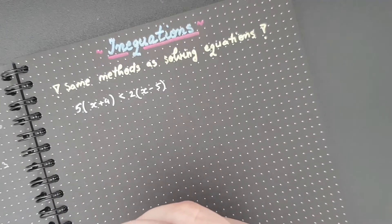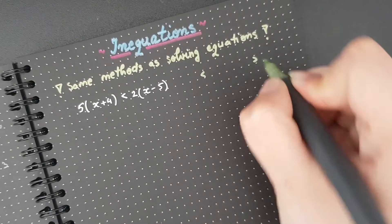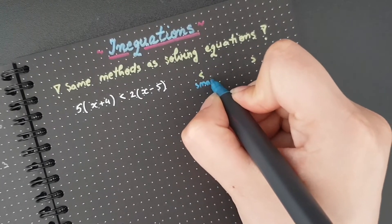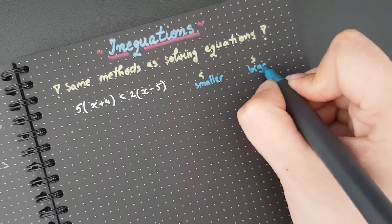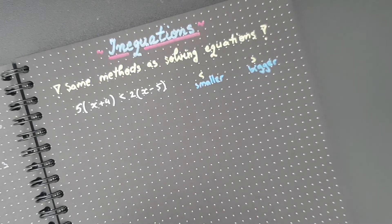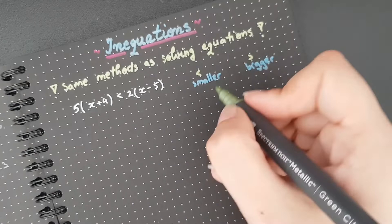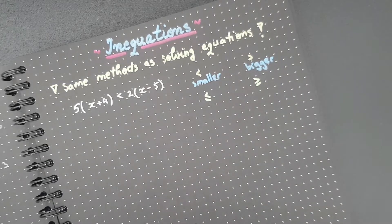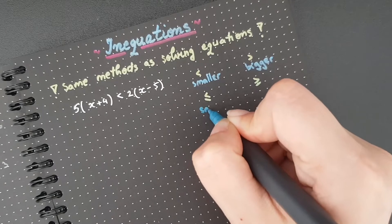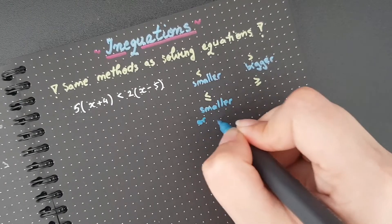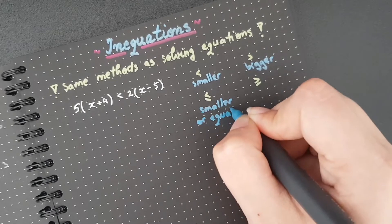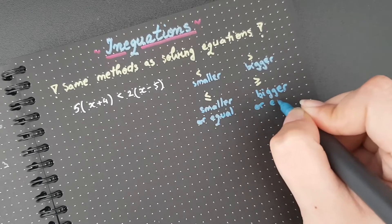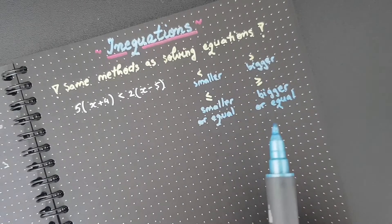So just a reminder, this is smaller, this is bigger. So this is smaller, this is bigger. We also have smaller or equal and bigger or equal. So those are what the signs actually mean.